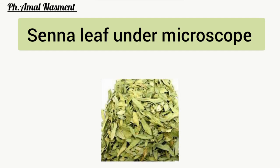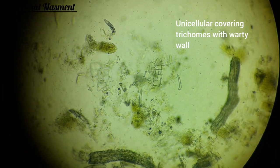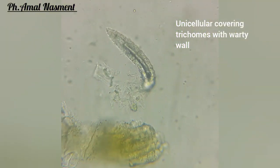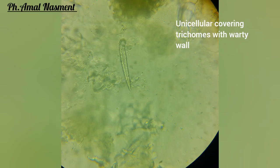Let's look at senna leaf under the microscope. Senna leaf has special characteristics and unique elements under the microscope. One of these unique elements is the covering trichomes, or non-glandular trichomes. It has a unicellular trichome with